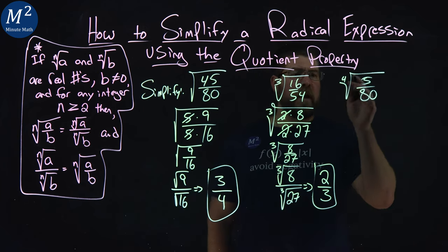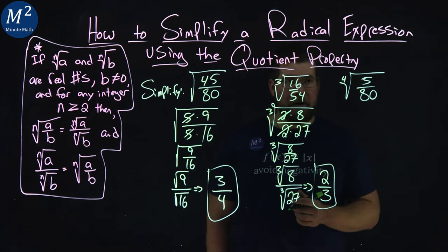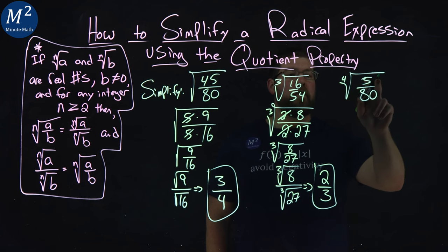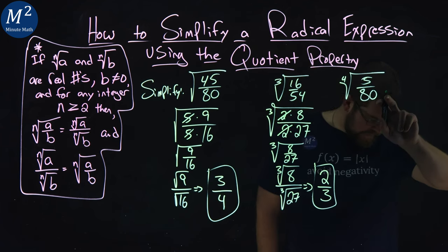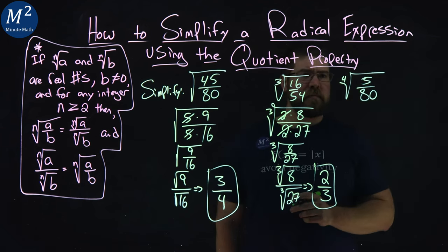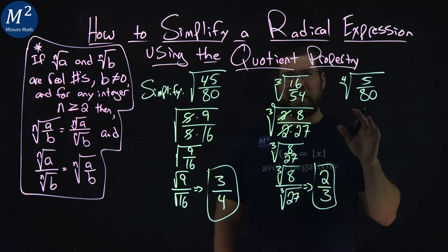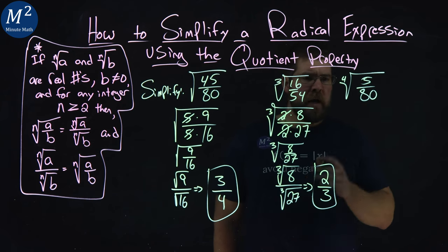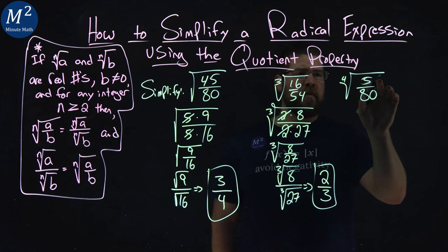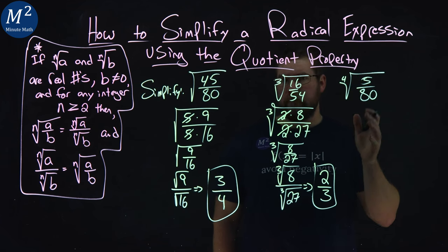Now, lastly, we have the fourth root. We have the fourth root of 5 over 80. Well, how can we break this down?